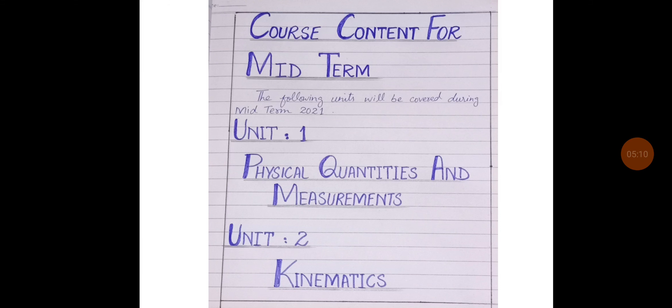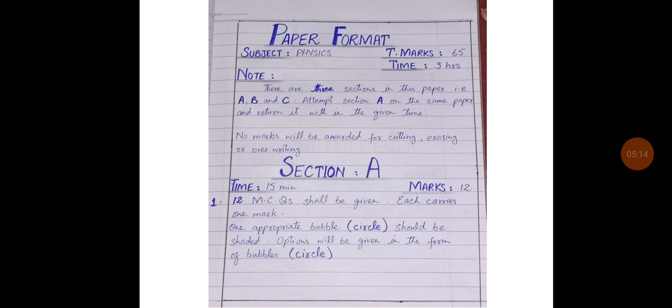Listen carefully all the instructions and closely zoom your screen. After writing the course content on the next page, you will start the paper format for the midterm exam as well as for the final exam. Mention your subject, that is Physics, the heading subject, total marks, time, note. It will be with blue marker. Total marks will be 65 and time of this paper is 3 hours. Write the heading of note and start in paragraph form. There are 3 sections in this paper that is A, B and C. Attempt section A on the same paper and return it within the given time. No marks will be awarded for cutting, erasing or overwriting.